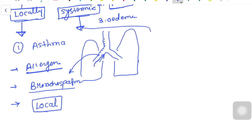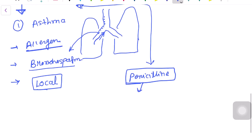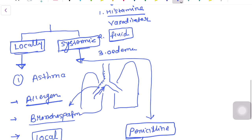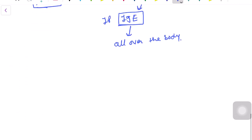For the systemic type, let's take penicillin as an example. When we give penicillin injections to a patient intramuscularly or intravenously, it goes into blood circulation. If the patient's body has already formed IgE antibodies, they will react with penicillin and produce a reaction all over the body. This is considered a systemic anaphylaxis reaction.